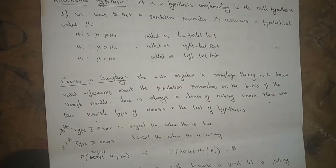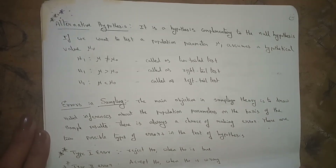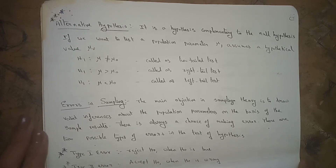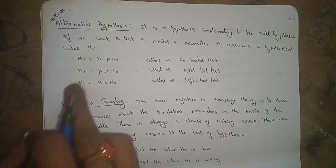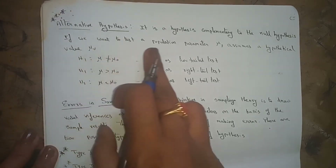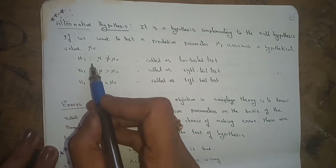The next one is alternative hypothesis. It is a hypothesis complementary to the null hypothesis. If we want to test the population parameter, and μ assumes a hypothetical value μ₀, we denote the alternative hypothesis as H₁. If H₁: μ ≠ μ₀, this is called a two-tailed test.